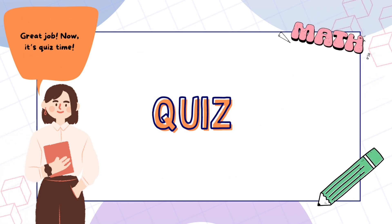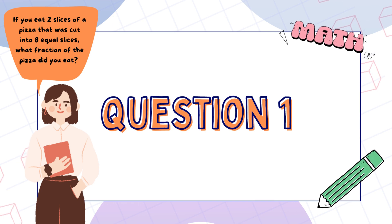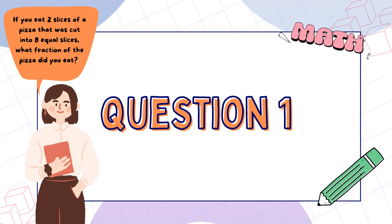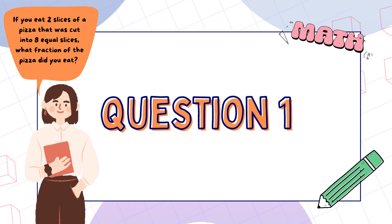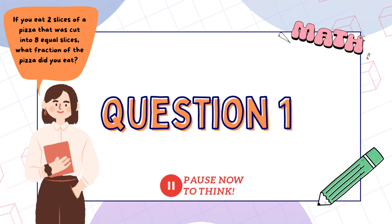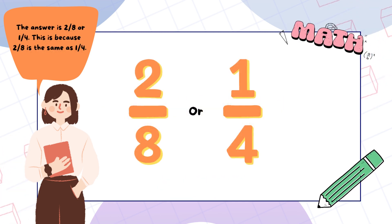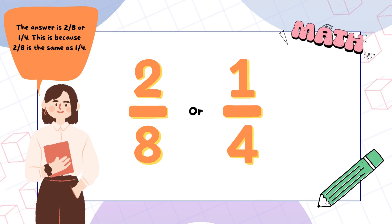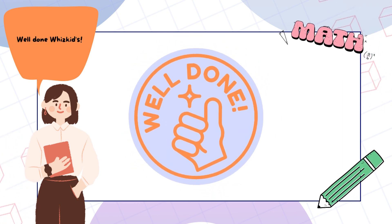Now it's quiz time! Question one: if you eat two slices of a pizza that was cut into eight equal slices, what fraction of the pizza did you eat? Pause now to think. The answer is two eighths, or one quarter. This is because two eighths is the same as one quarter. Well done, WizKids.